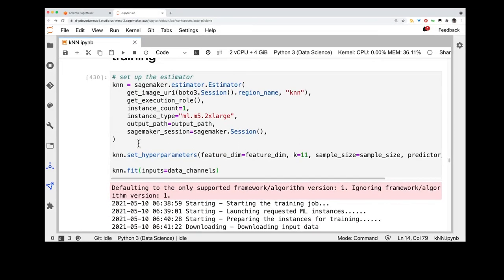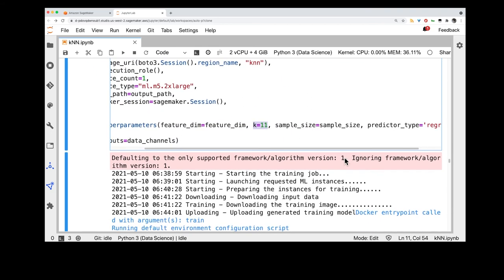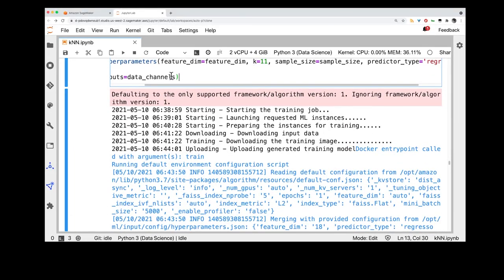Finally, we create the corresponding estimator object, choose the instance type, and specify the relevant hyperparameters. In this case, we chose K to be 11, meaning we're only going to look at the closest 11 houses to assess the house value.